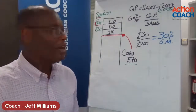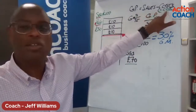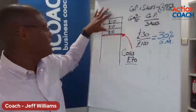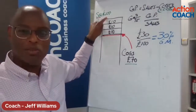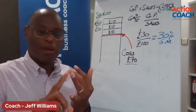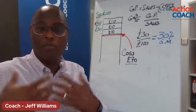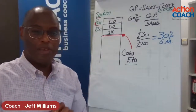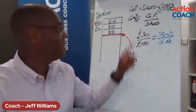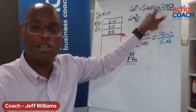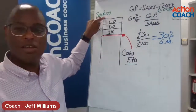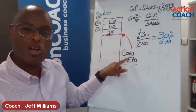The formula for gross profit is sales minus costs — your sales minus your cost of goods sold, whatever it costs you to deliver your service. In this simple example, we've got a product we're selling for £100, but it cost us £70 to produce. That could be £70 in raw materials, £70 in raw materials plus labor, or £70 in professional time given to our customer. The cost of goods sold is £70.